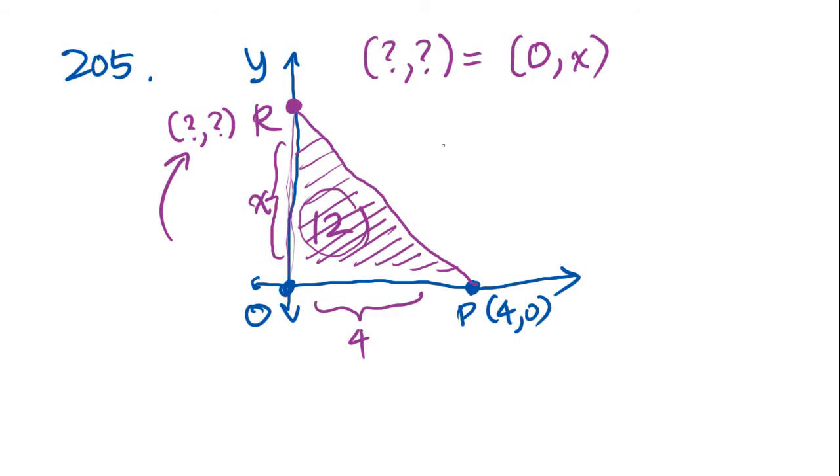And as you know, the area of the triangle is length times width divided by 2. In this case, we are going to have X and 4 divided by 2 equals 12. That becomes 2. We get 2X equals 12. X equals 6.